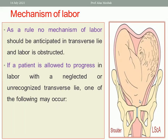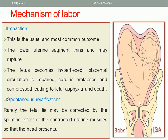What is the mechanism of labor? As a rule, no mechanism of labor in transverse lie should be anticipated — labor will be obstructed. This is very dangerous because obstructed labor may cause uterine rupture. If the patient is allowed to progress with a neglected or unrecognized transverse lie, impaction may occur: the shoulder becomes impacted in the pelvis, the lower uterine segment becomes stretched and thin, with development of a pathological retraction ring between the lower and upper uterine segments.